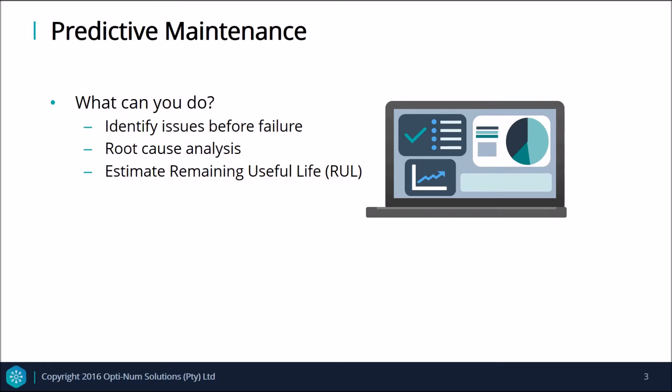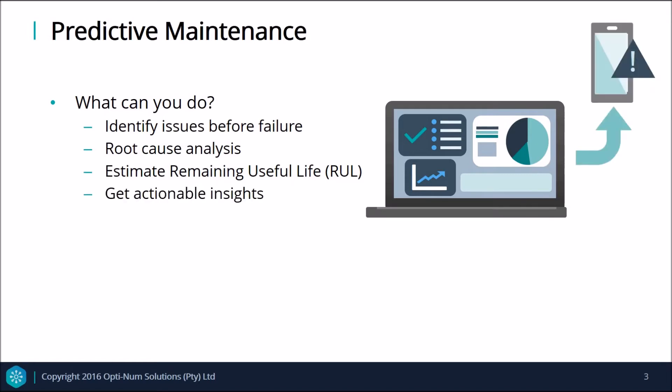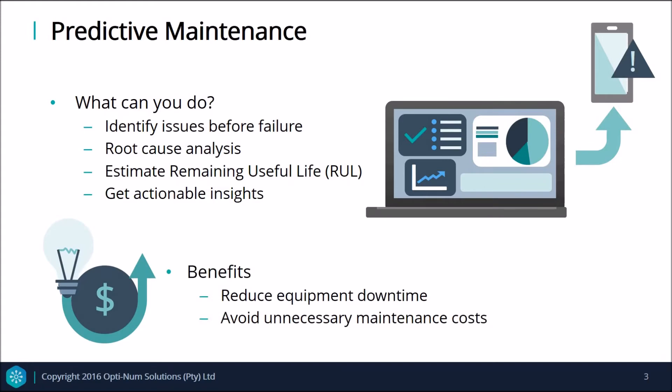From all this information, the end goal is to send out a message or warning to the operators so that they can take action before failure occurs. From performing predictive maintenance, equipment owners can reduce equipment downtime by doing maintenance strategically and being aware of events before they happen, leading to lower maintenance costs.